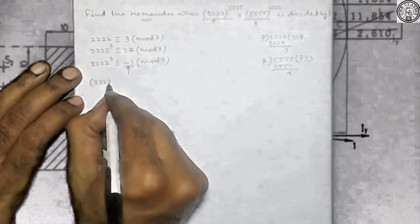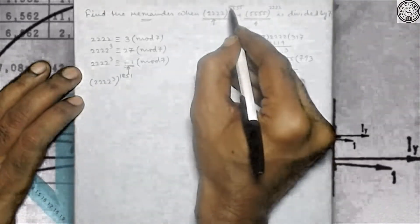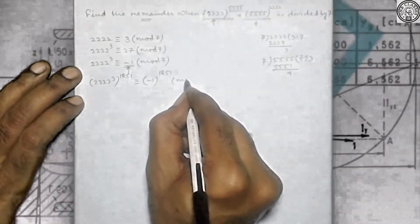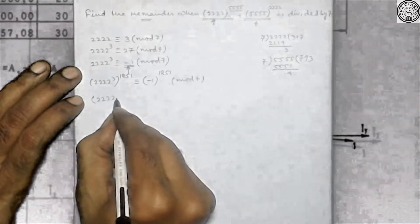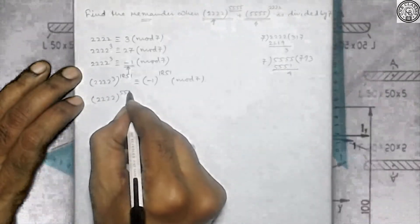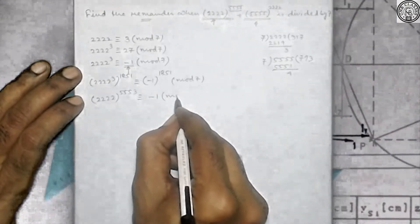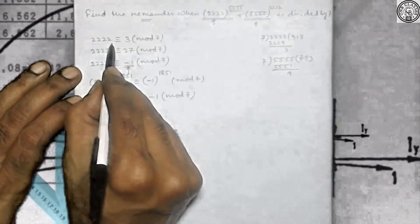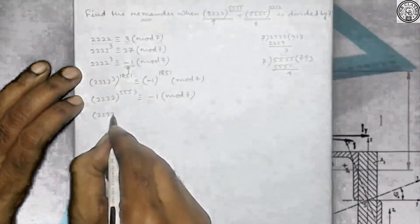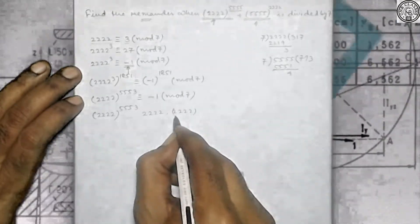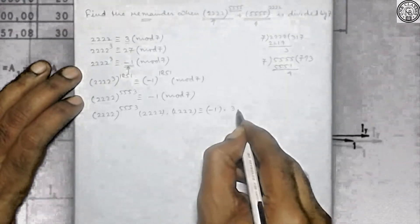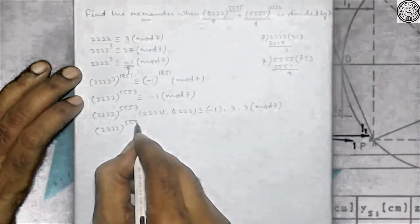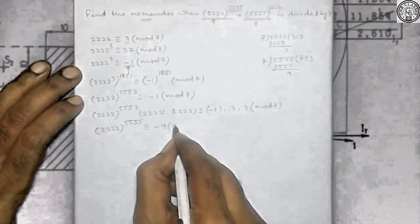Now let me raise its power to 1851, because we have to come closer to √5. This gives (√2)^3 whole to the power 1851, which is (−1)^1851 modulo 7. So it is coming to (√2)^5553 ≡ −1 (mod 7). Now I need √2 squared. Since √2 ≡ 3 (mod 7), we can write: √2^(√5) is nothing but (−1) × 3 × 3 modulo 7.